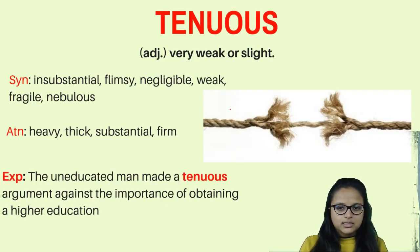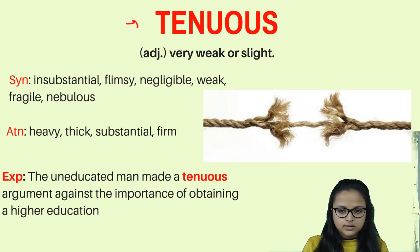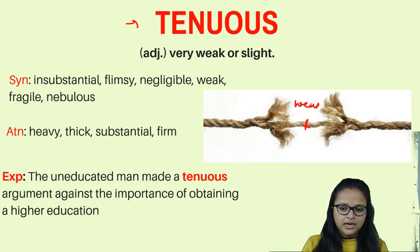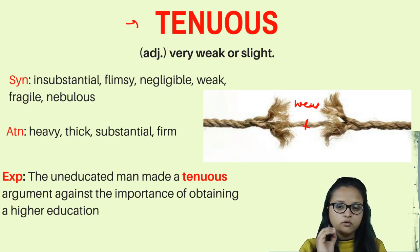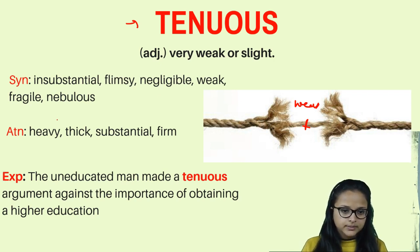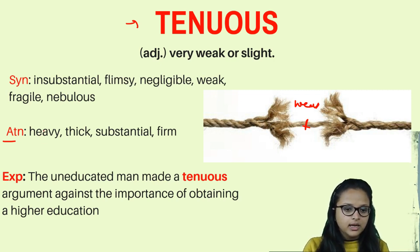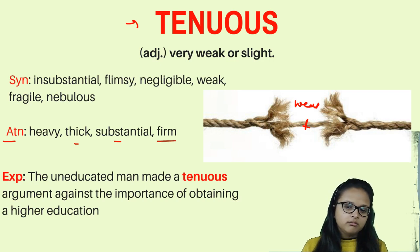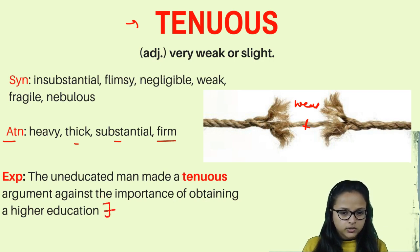The next word is 'tenuous.' Tenuous refers to something that is very weak and fragile — it can break at any time. Synonyms: insubstantial, flimsy, negligible, weak. Antonyms: heavy, thick, substantial, firm. Example: The uneducated man made a tenuous argument against the importance of obtaining higher education — meaning the argument was very weak.